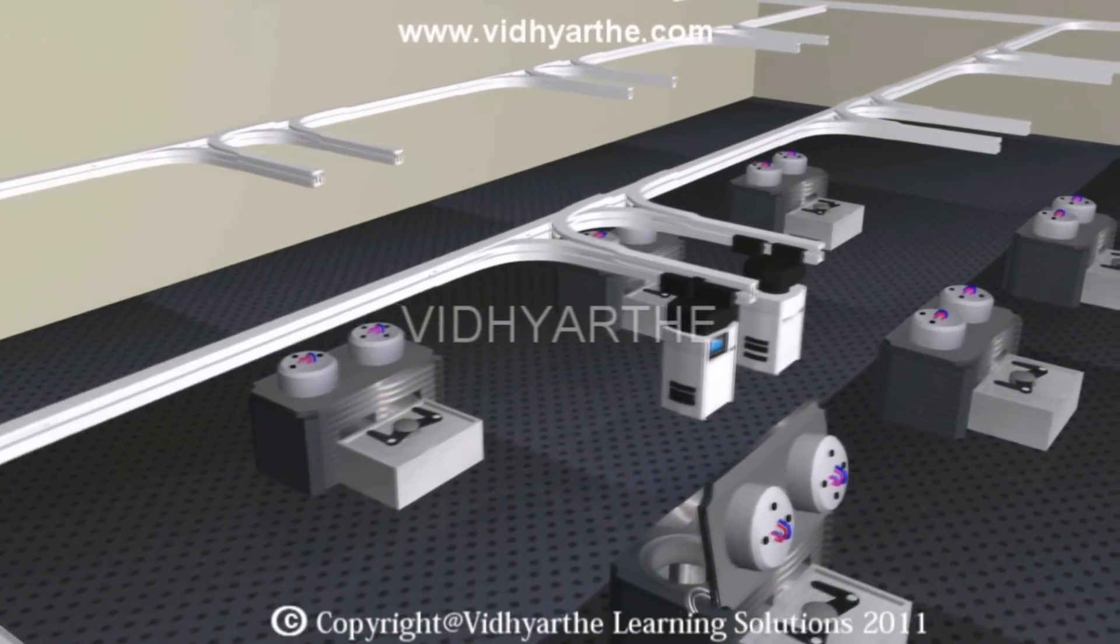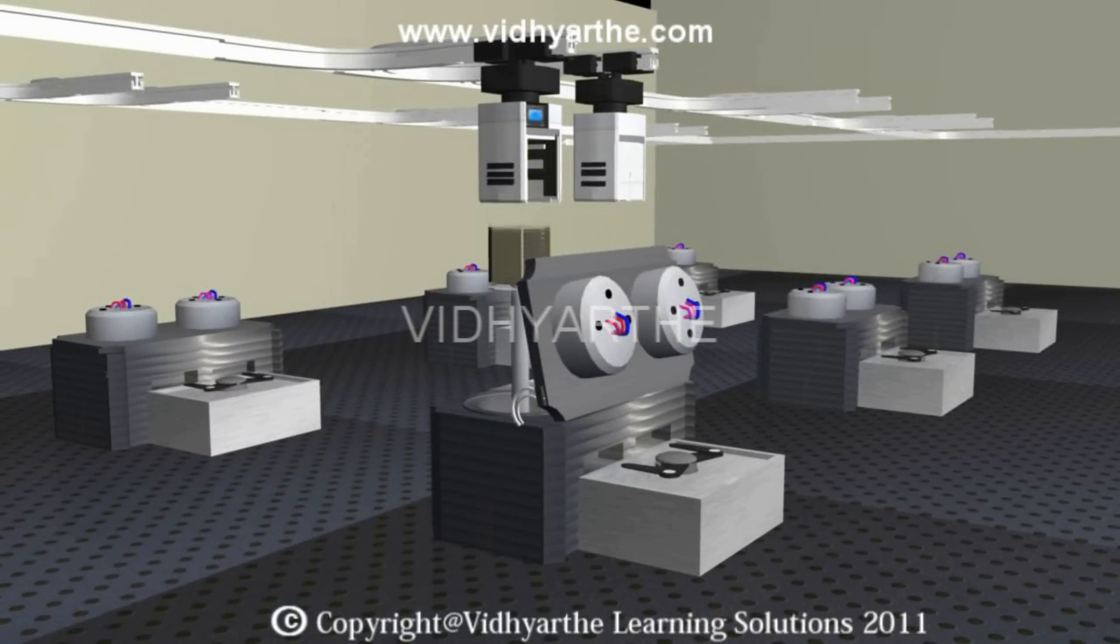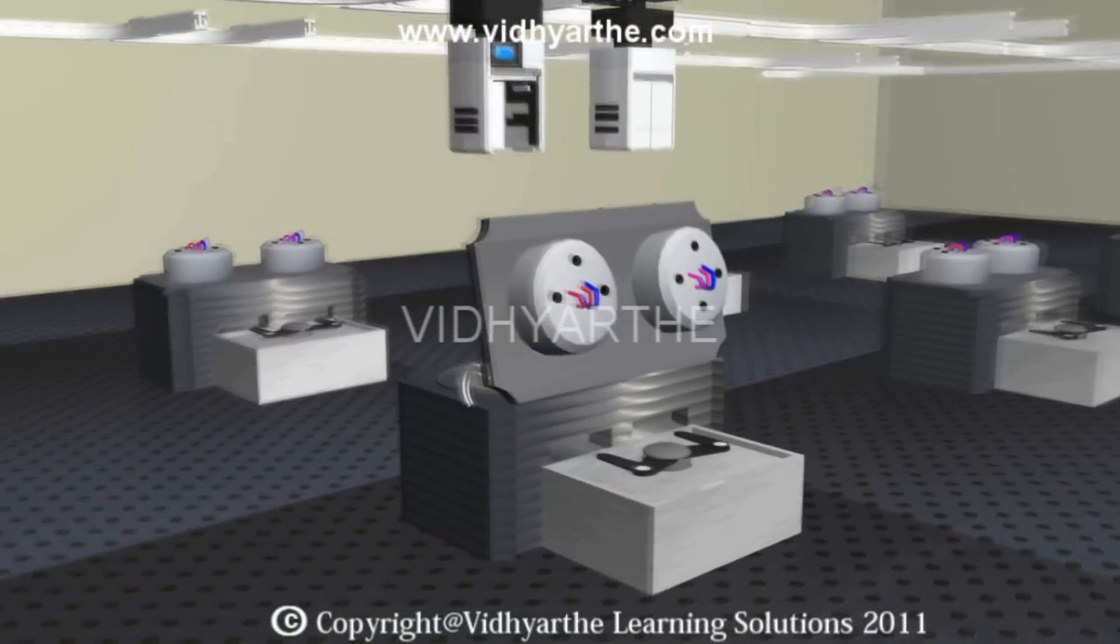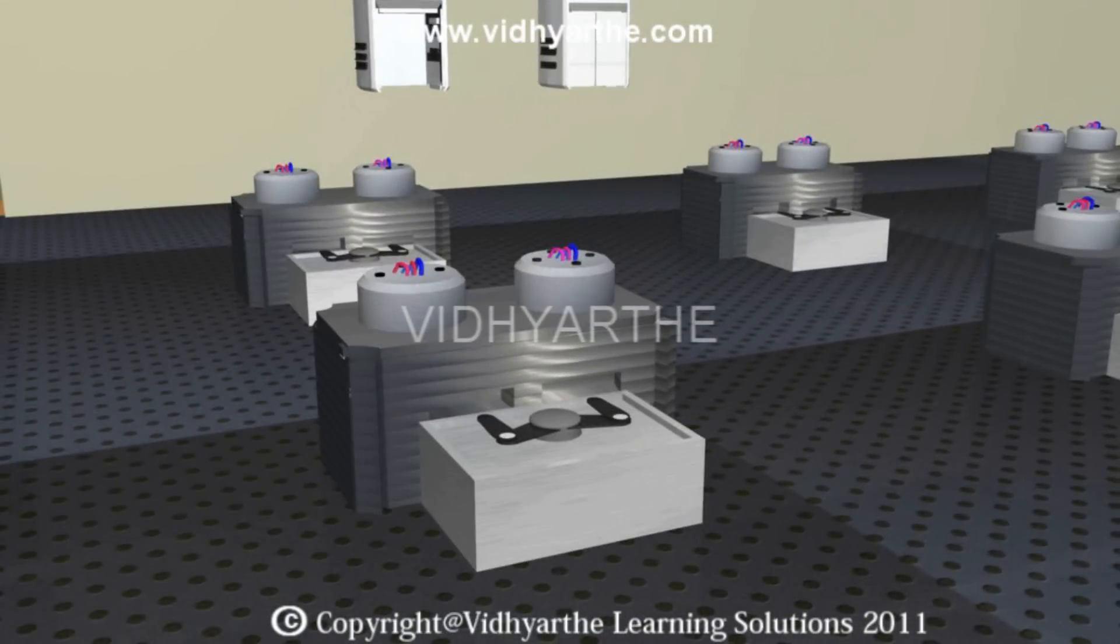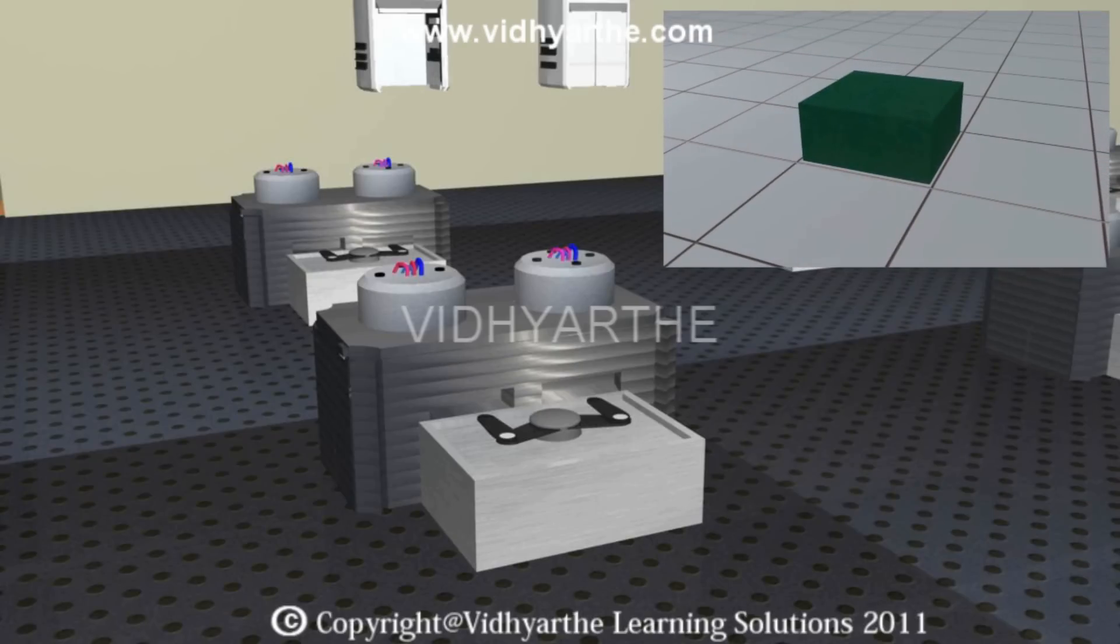The first step in the fabrication process is called chemical vapor deposition. In this step, a thin layer of very pure silicon is deposited on the wafer. This pure silicon will form the base on which the transistors will be grown.